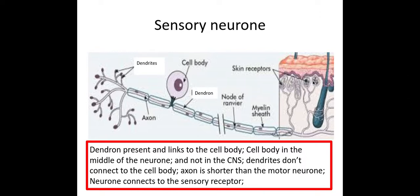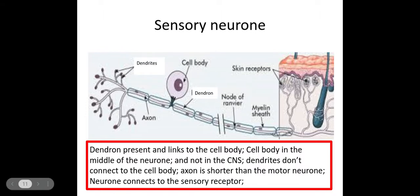The sensory neuron is connected to the receptors — in this case, skin receptors. The nerve impulse is then taken along a dendron. The dendron is the part of the neuron which links the receptors to the cell body. The cell body is in the middle of the sensory neuron. I then have a short axon. The axon is the part of the nerve which takes the impulse away from the cell body, and it's taken to the end, which is where the dendrites are.